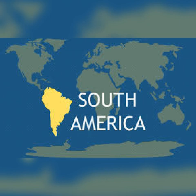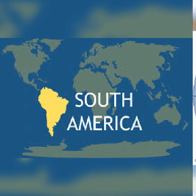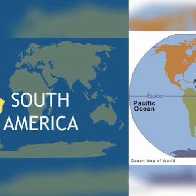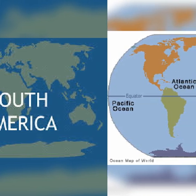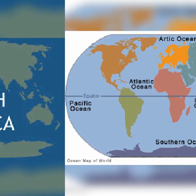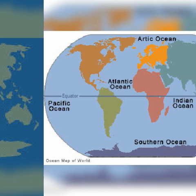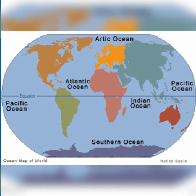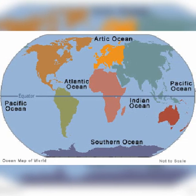Now, let's move on to the oceans. What is meant by an ocean? The salt water masses located among continents are called oceans.